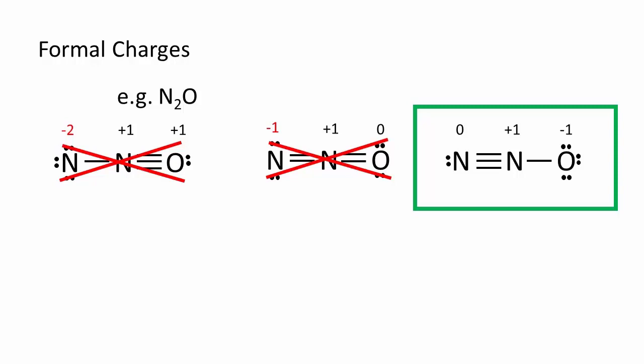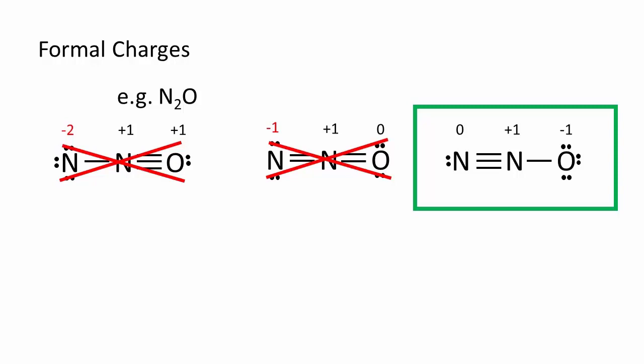Sometimes, we can have two or more Lewis structures that are clearly equally good. Consider the following three structures for the nitrate anion, NO3-. They are all technically different, but clearly of equal quality. In such cases, resonance exists,